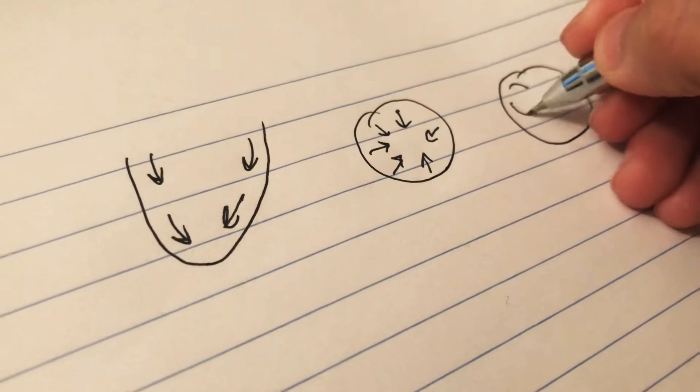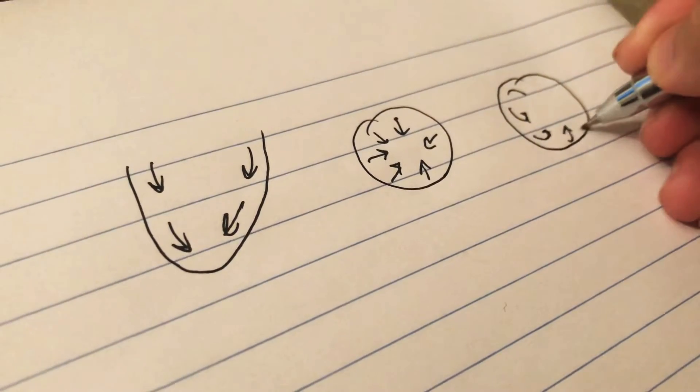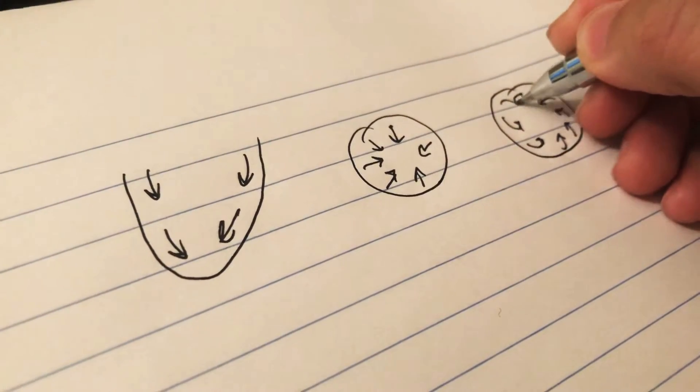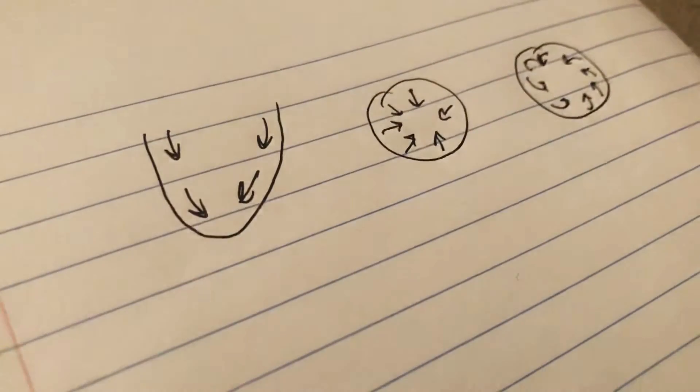So in that case, the ventricle contracts in a ringing fashion. So there are three ways that the ventricle contracts.